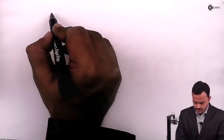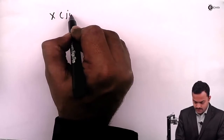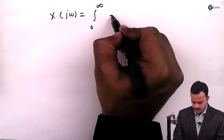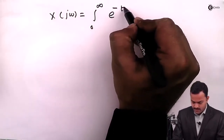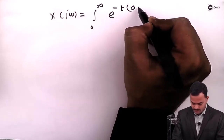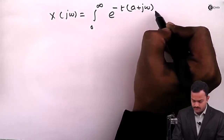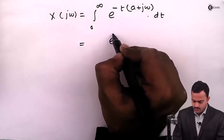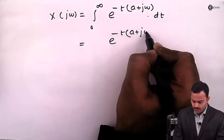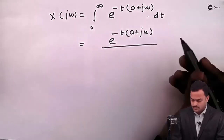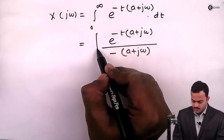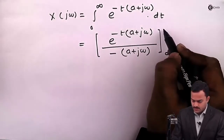Further simplification gives us X(jω) as the integral from 0 to infinity of e raised to minus t, where I have taken minus t common inside the bracket, giving a plus j omega, into dt. The integration of this is e raised to minus t(a plus j omega) upon minus (a plus j omega), with limits 0 to infinity.